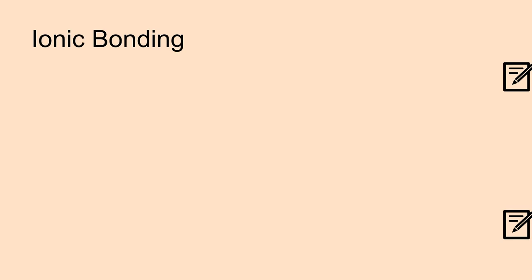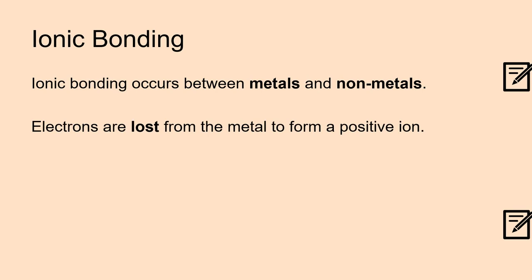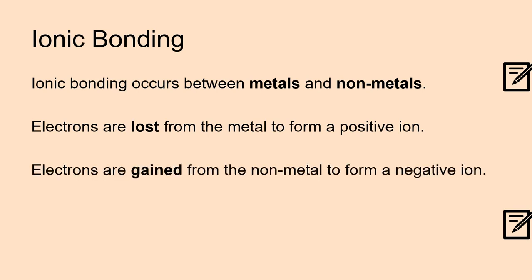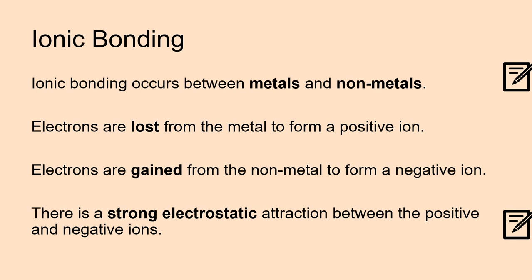So we're going to be looking at ionic bonding. Ionic bonding occurs between metals and non-metals. Wherever you see this little pad and pencil logo in this video, please pause the video and write down the sentence that is next to it. It's really useful for you to have this information. Electrons are lost from the metal to form a positive ion, whilst electrons can be gained from the non-metal to form a negative ion. And there is a strong electrostatic attraction between the positive and negative ion. And that is what we call the ionic bond.